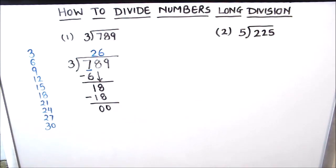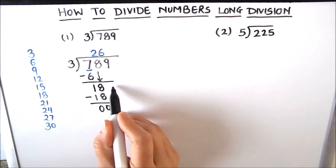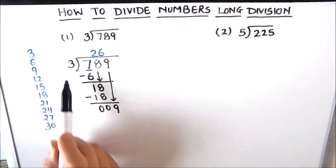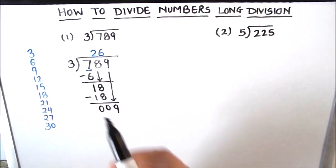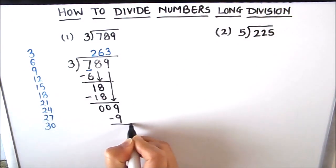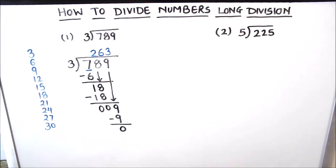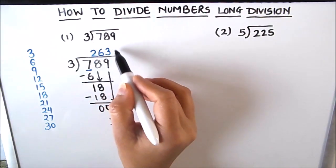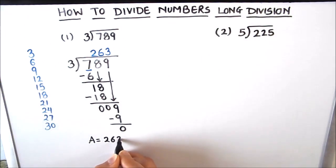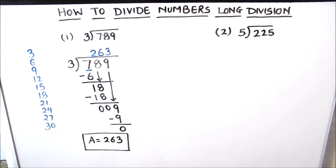The next step is to drop down the next digit. We check whether we have more numbers to divide — yes, one more. We drop down the next number 9. Now our divisor is 3 and dividend is 9. We check how many times 3 goes into 9: 3×3=9. We write 3 in the quotient and subtract 9 from 9 — remainder is 0. We have divided all the numbers, so we stop. The number on top is our quotient: the answer is 263. We will box the answer and move on to the next question.